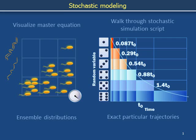In this slide deck we illustrate methods for describing the dynamics of stochastic systems. In the first video we will introduce the master equation, which is used to describe the time evolution of the probability distribution of a population of stochastic systems. In the next video we will outline the stochastic simulation algorithm, which is used to calculate examples of particular trajectories of individual stochastic systems.